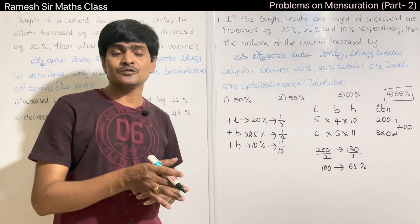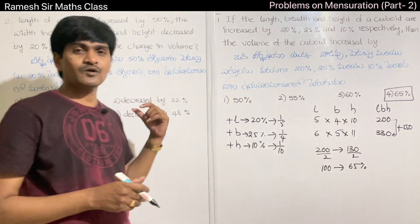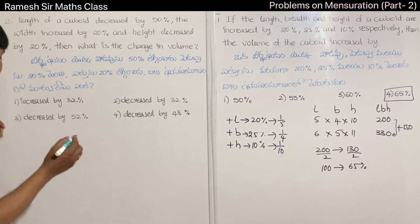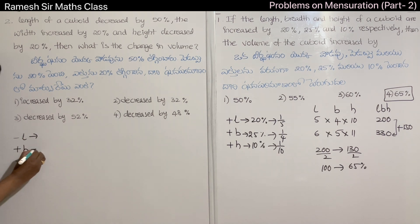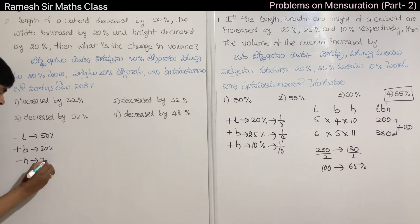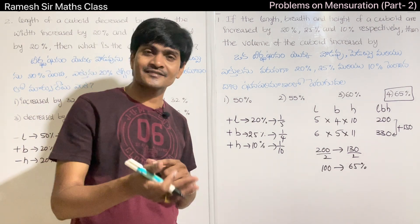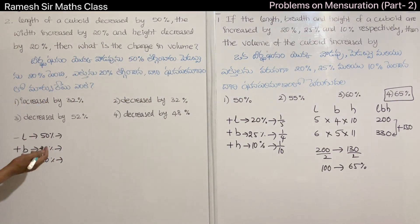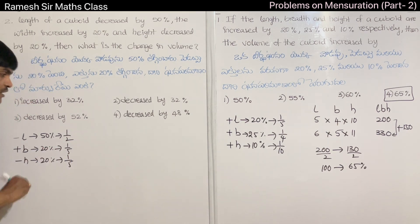If the length decreases by 50%, we can find out: 50% is 1/2, and 20% is 1/5. The length decreases, so we take the reduced measurement. The height also decreases by 20%, which is 1/5. Now, the original L, B, H measurements and their new values are calculated from these fractions.